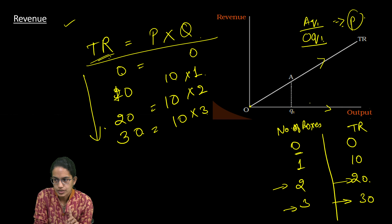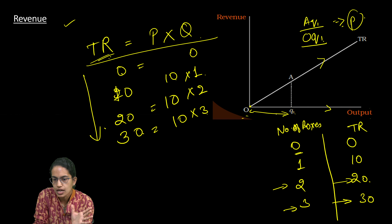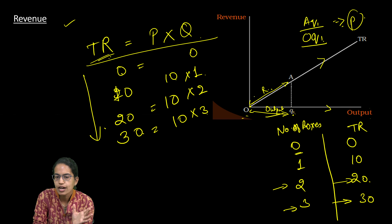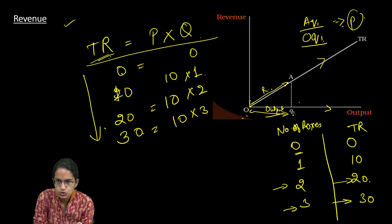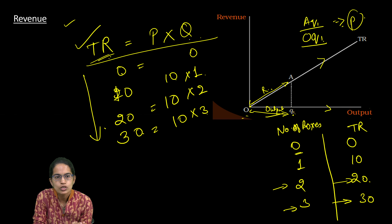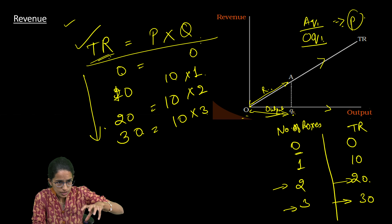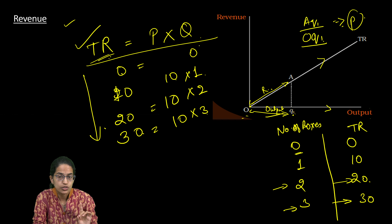When output is one unit, we understand this as a horizontal distance. On the graph, the vertical axis represents revenue and the horizontal axis represents output. The slope, which is AQ1 divided by OP1, represents the price. Therefore, total revenue is nothing but the market price of the goods multiplied by the firm's output.